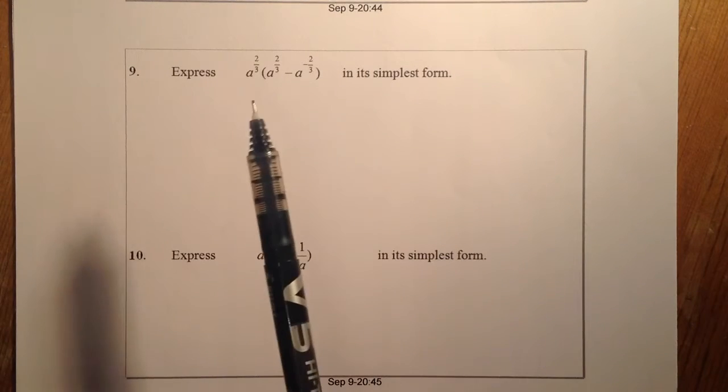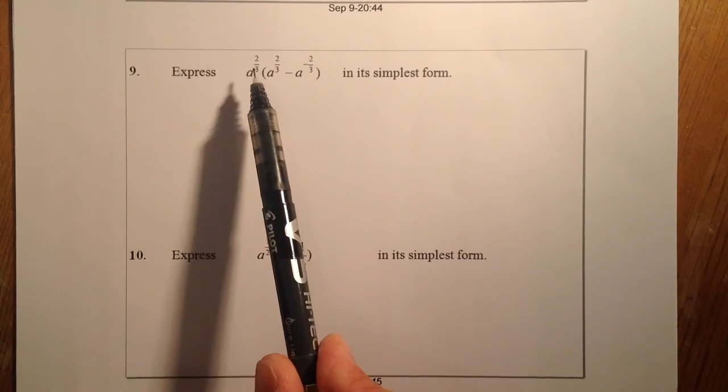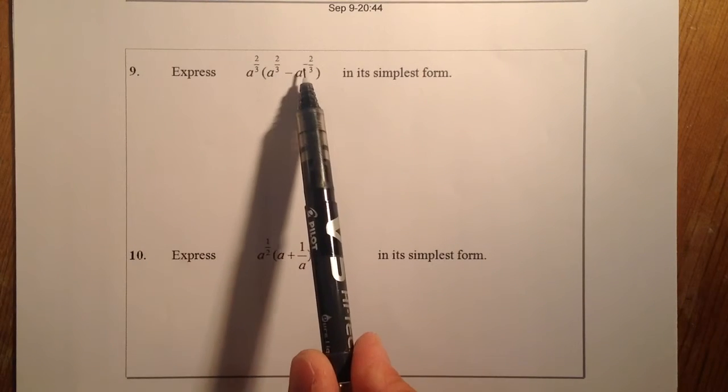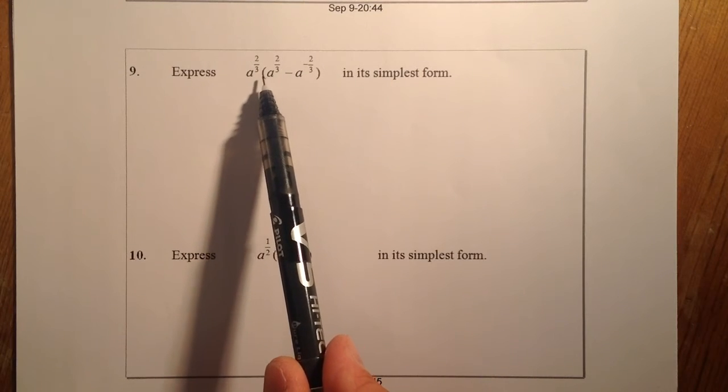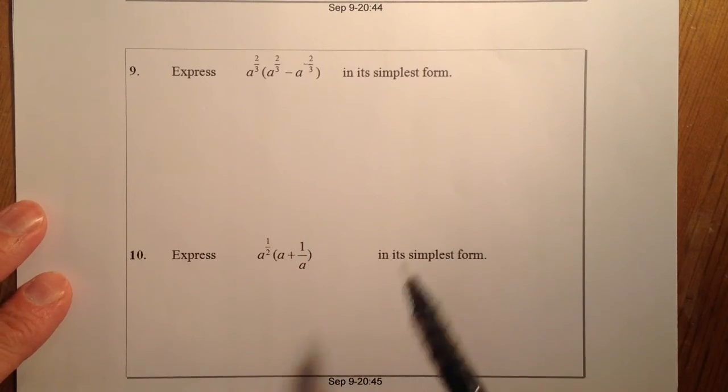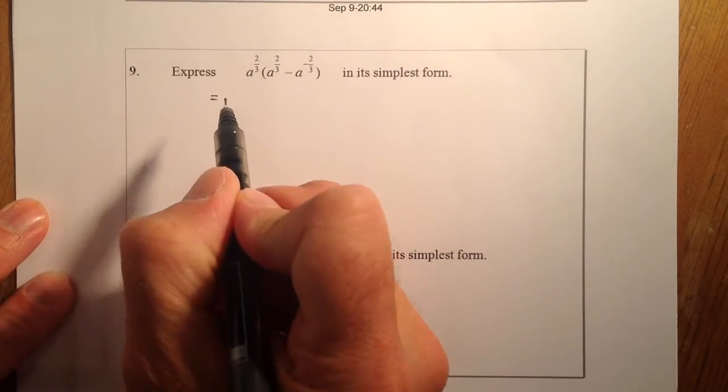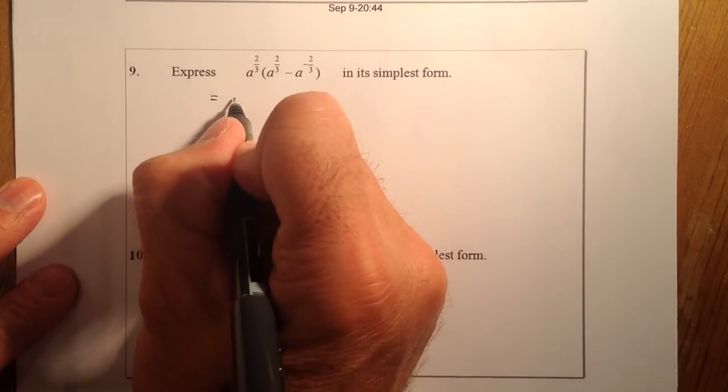What we have here is we have to express this here in its simplest form. And what I can see is I've got fractional indices, I've got a negative index here, and what I'm going to be doing is I've got a bracket I'm going to have to multiply out here. So the first thing I'm going to do is I'm going to multiply the bracket out, and remember when we multiply, we're going to add the indices together.